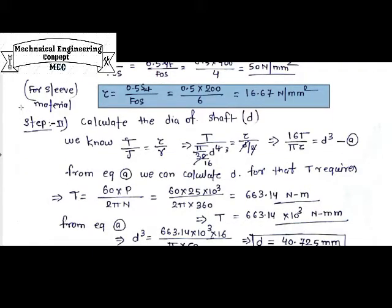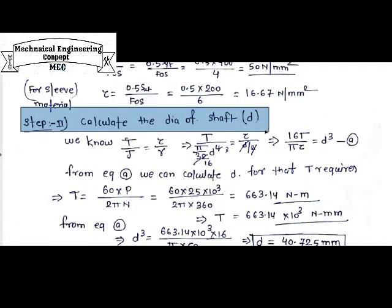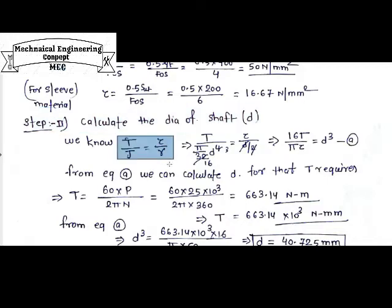After calculating permissible stresses in step 1, in step 2 we need to calculate the diameter of the shaft. This is done using the torsional equation: T/J = Tau/R = Gθ/L. Using the first two terms T/J = Tau/R, we can calculate the shaft diameter, small d. Here T is the torque transmitted, J is the polar moment of inertia, Tau is the shear stress induced, and r is the radius.